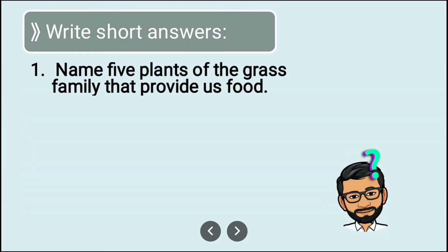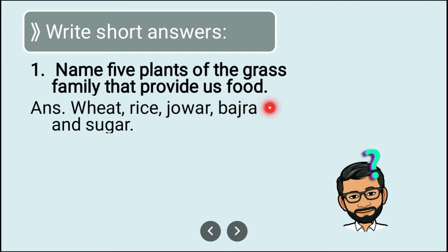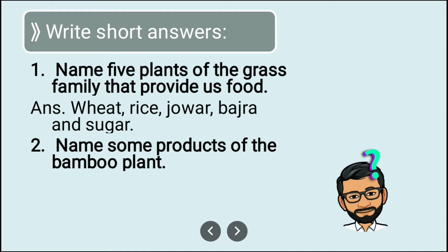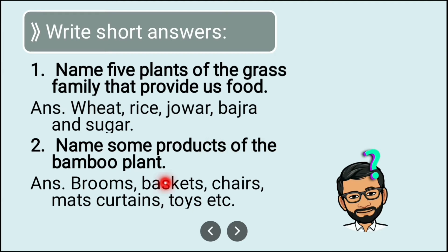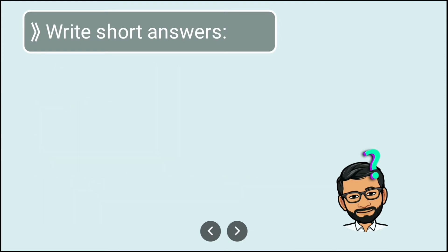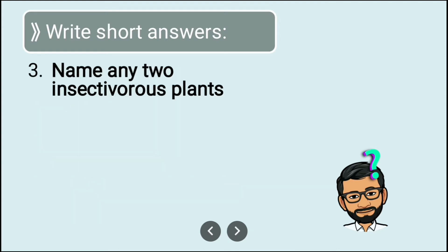For short answers: name five plants of the grass family that provide us food. They are wheat, rice, jowar, bajra, and sugarcane — all belong to the grass family. Next, name some products of the bamboo plant: brooms, baskets, chairs, mats, curtains, toys, and many more.